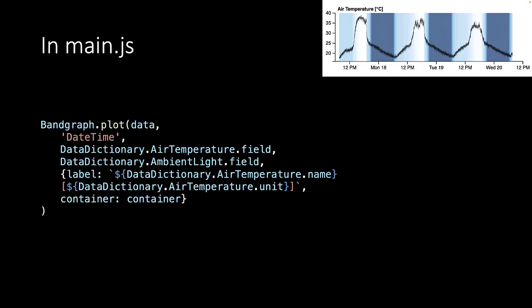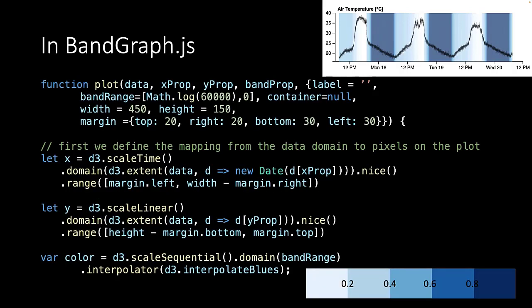In the main.js file, we now call the bandgraph plot function that we will define in the bandgraph.js file. The definition of this plot function starts very similar to that of the stream graph.